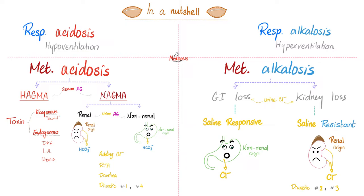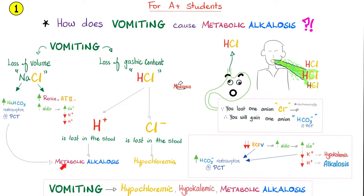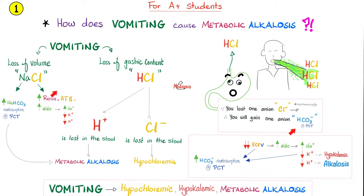Vomiting causes metabolic alkalosis. When you vomit, you're losing acid from the stomach. When you lose the acid, you become more basic — hashtag alkalosis. It's not the lungs' fault, so we call it metabolic alkalosis. You're losing H+ and that's why you develop metabolic alkalosis. You're losing chloride, and that's why you develop hypochloremia. When you vomit, you lose volume — volume depletion. Anytime you develop volume depletion, aldosterone gets triggered. Aldosterone will reabsorb sodium and chloride, trying to attract more water to replenish your volume in the kidney. But aldosterone will also ditch potassium in the urine, causing hypokalemia. So vomiting can cause hypochloremic, hypokalemic metabolic alkalosis with extracellular fluid volume depletion.